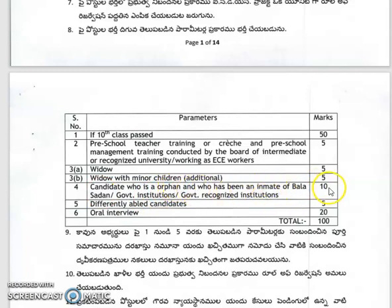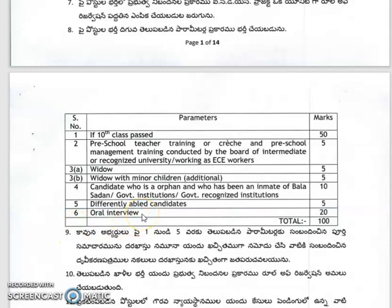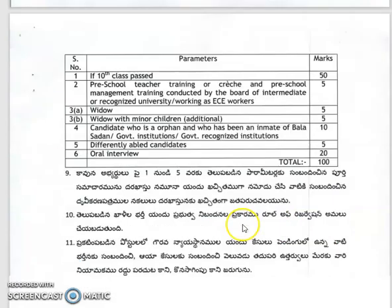Orphan candidates get 10 marks, differently abled candidates get 5 marks, and there is an oral interview. You apply in this category. The oral interview is 20 marks, so the total is 100 marks for this job.